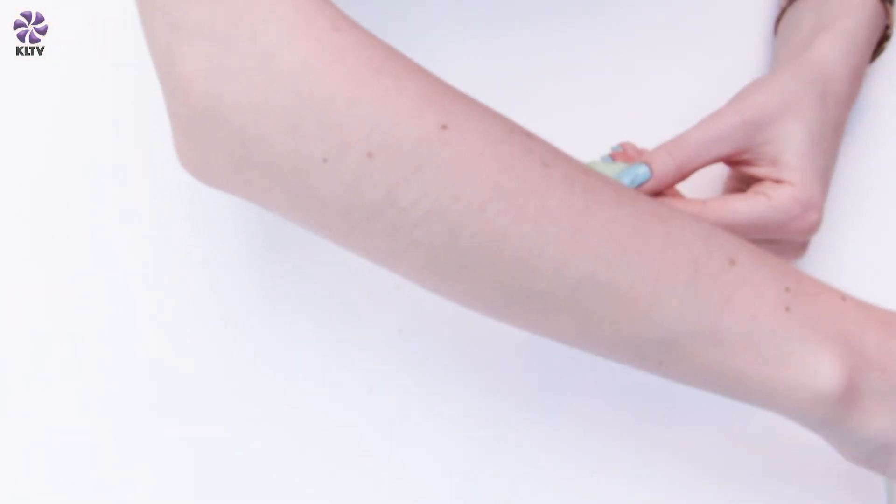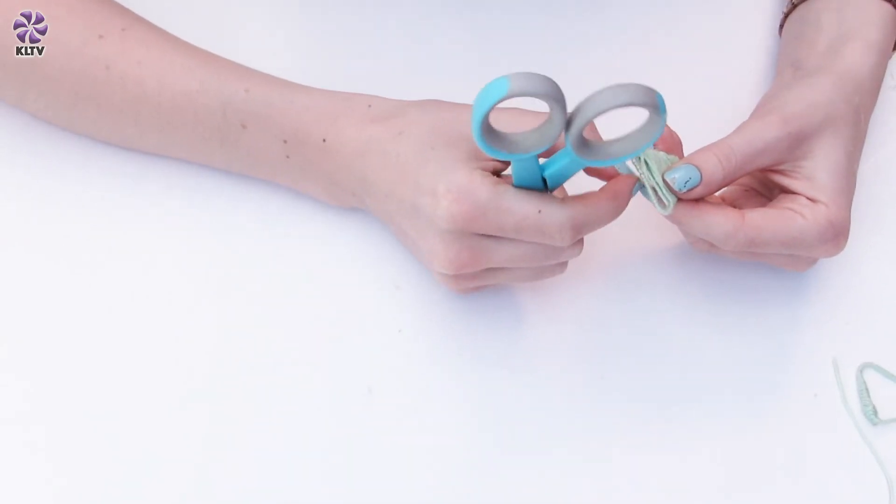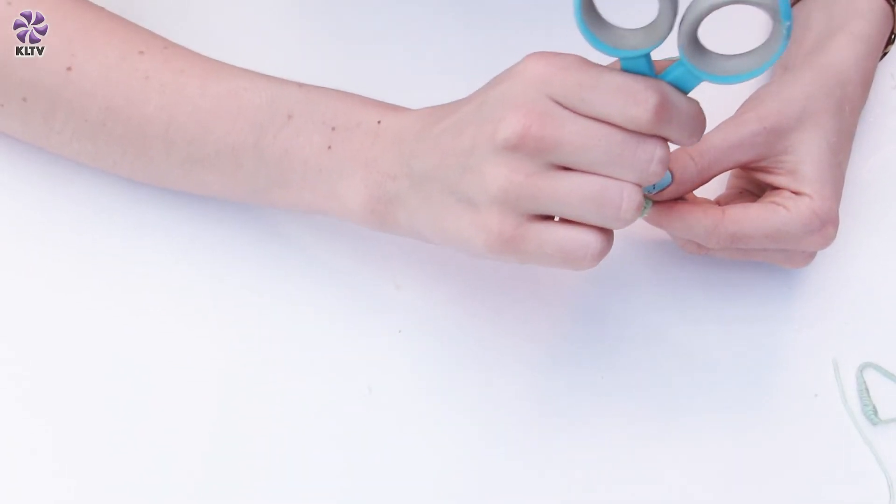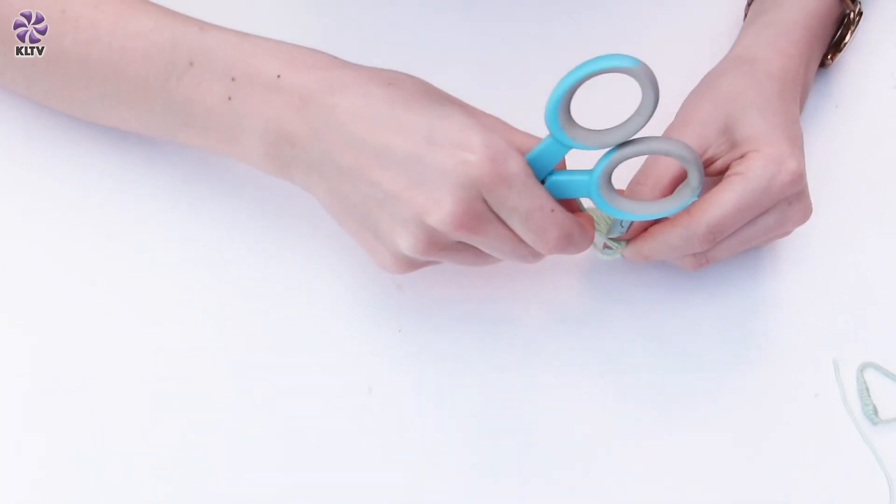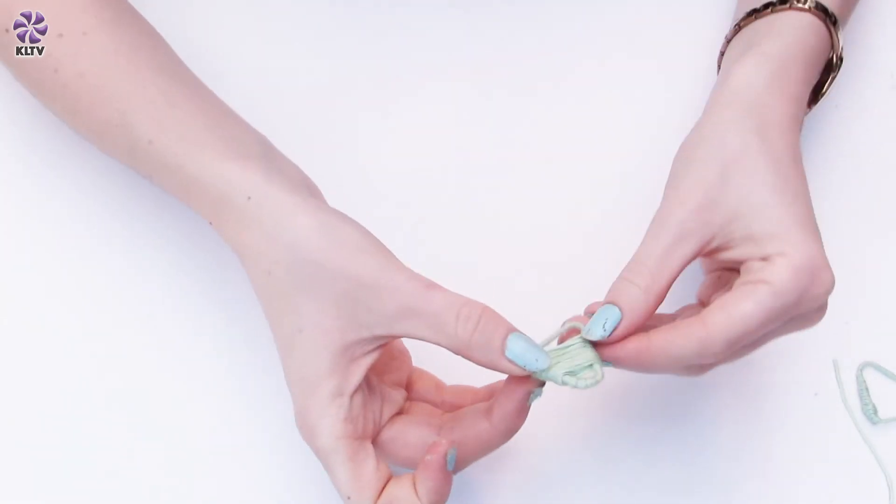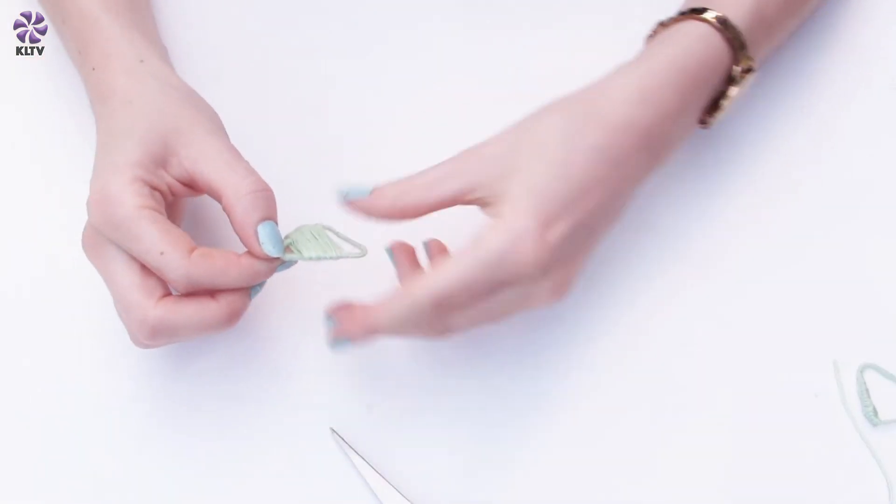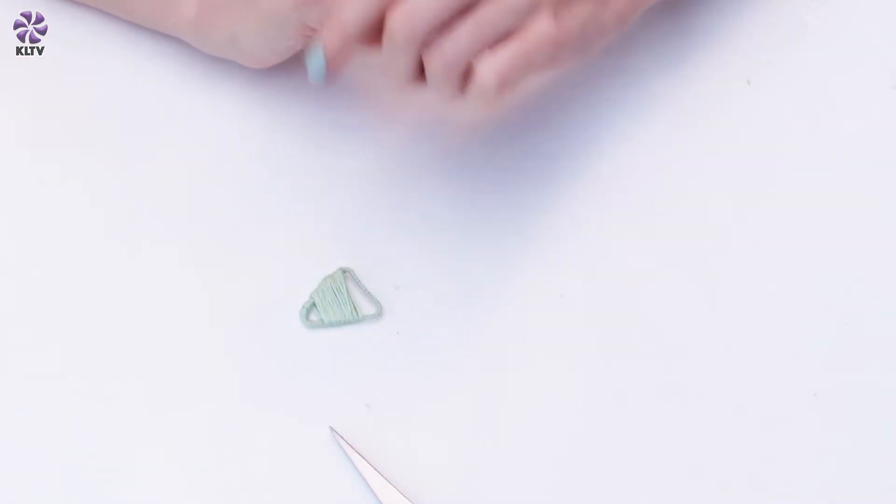Take your scissors if you want to poke that through to the other side, and tie that off into place. And there you have it, there's your first shape for your earring.